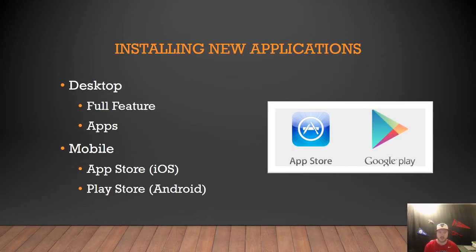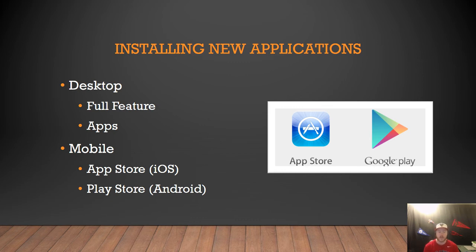Let's talk about installing applications on a desktop versus a mobile device. On the desktop, a full featured application is going to take a lot longer to download because these programs are larger and you can complete more tasks using them. For apps on a desktop, they usually take less time and you can download them from a third party or the developer's website. For mobile devices, where you download from is specific to the device you're using. The App Store, found on any iPhone or iPad, is run by Apple. The Google Play Store is used on any Android device — whether you're using a Samsung, LG, or Google phone — as long as it's running the Android operating system. So the way that you download new applications depends on the type of operating system that you're running.